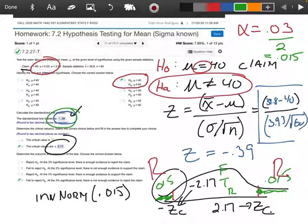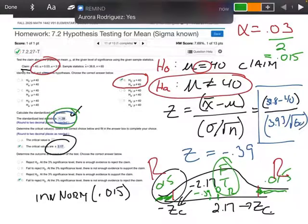the test statistic we came up with was negative 0.39. So if right here in the middle is 0, negative 0.39 is going to be right there. What area did we fall in? We fell in the fail-to-reject region.